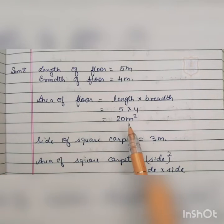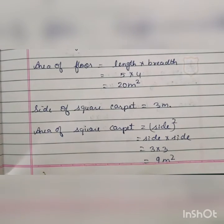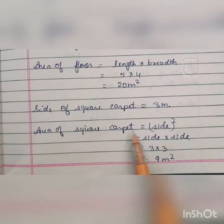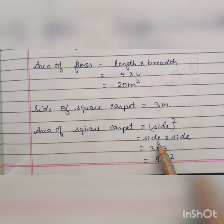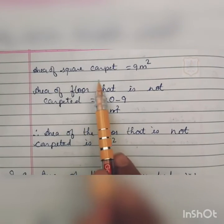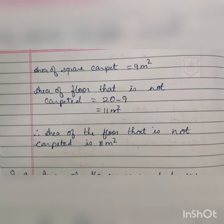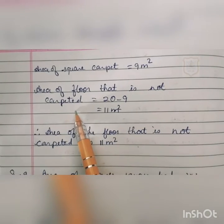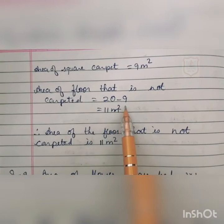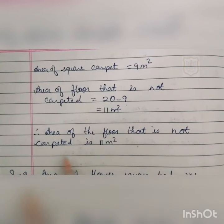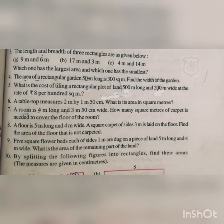Next we find the area of the square carpet. The side of the carpet is 3 meters, so the area is side × side, that is 3 × 3, giving 9 square meters. The area of the floor not covered by carpet is area of floor minus area of carpet: 20 − 9 = 11 square meters. Therefore, the area of the floor that is not carpet is 11 square meters.